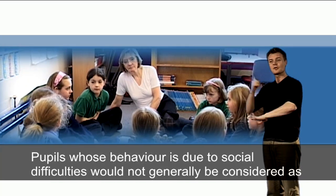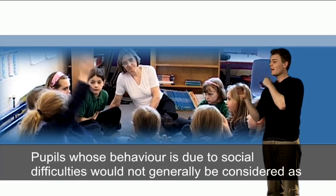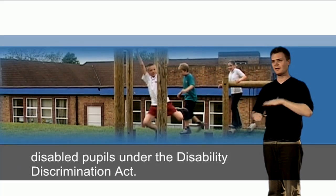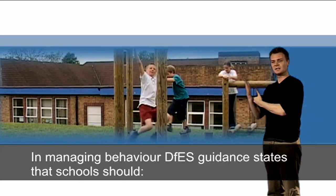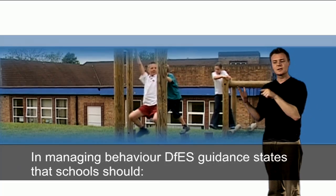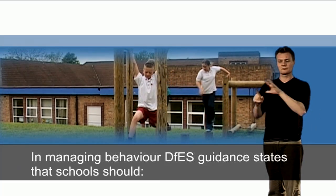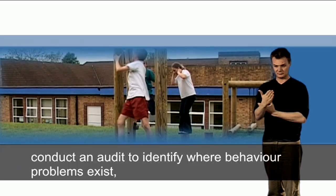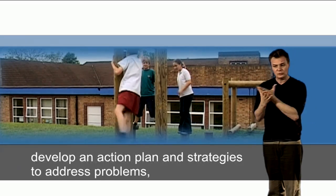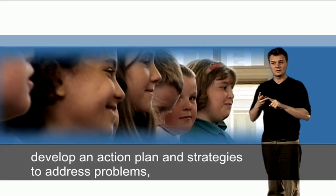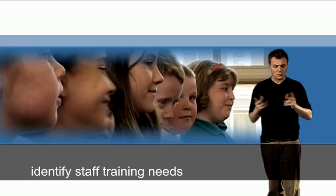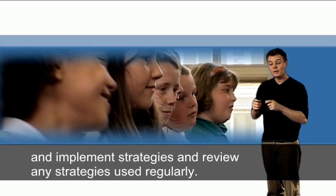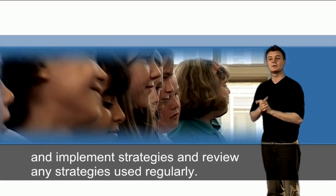Pupils whose behaviour is due to social difficulties would not generally be considered as disabled pupils under the Disability Discrimination Act. In managing behaviour, DFES guidance states that schools should conduct an audit to identify where behaviour problems exist, develop an action plan and strategies to address problems, identify staff training needs, and implement and review strategies regularly.